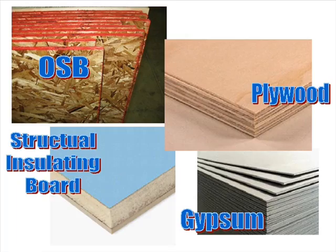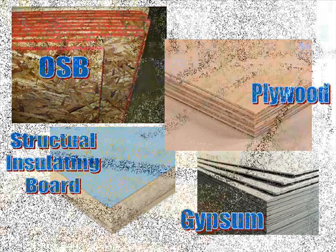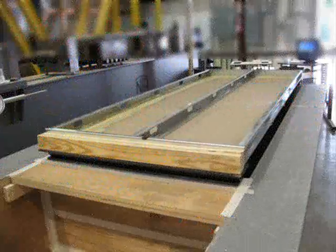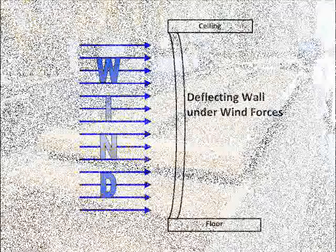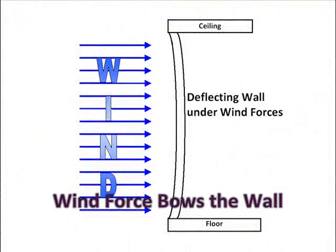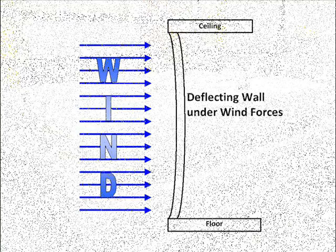However, any structural sheathing product, as defined by applicable building codes, must be tested to ensure structural adequacy and service life. A practical example of a real-life transverse load would be the force of wind blowing directly into the face of a wall.